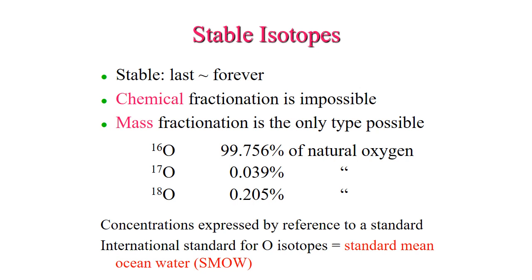The mass differences in these isotopes are less obvious than chemical differences, so when we're referring to a mass difference in terms of fractionation it's always going to be very small, but some fractionation may occur during the reactions. Therefore we could use these to help us identify what's happening in the rocks and how they're evolving over time.